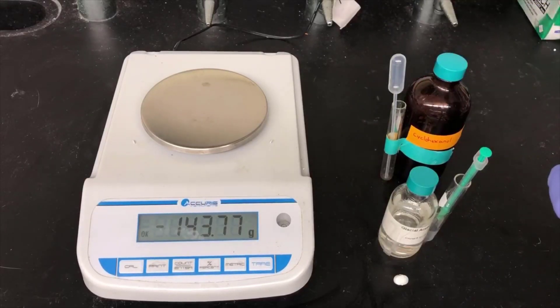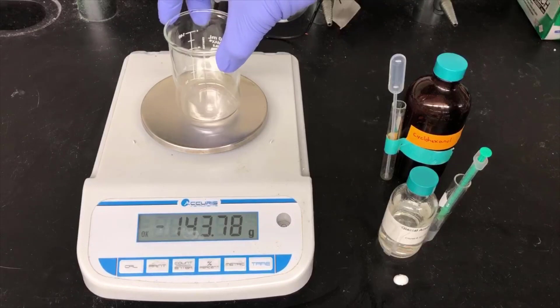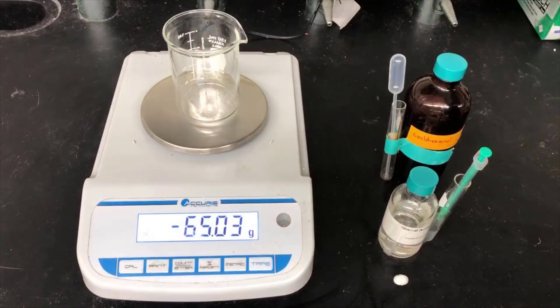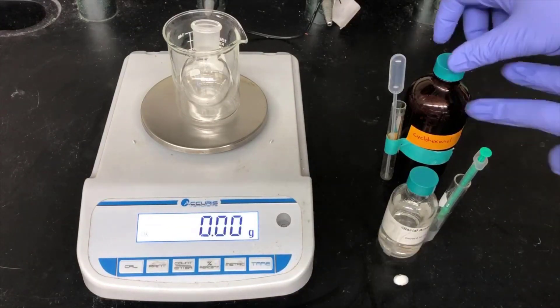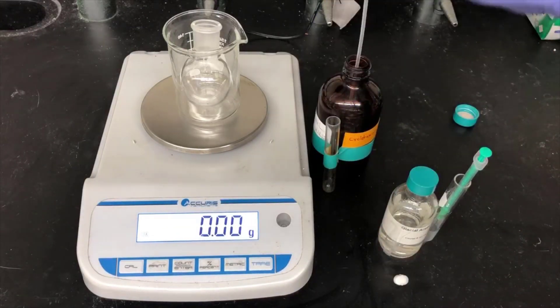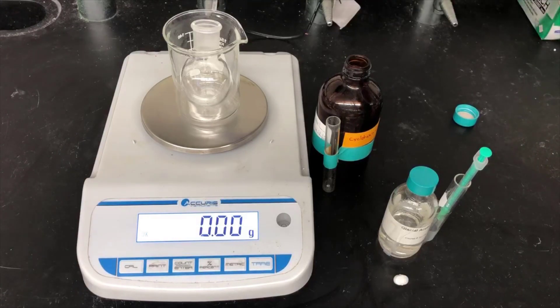We'll start the experiment by weighing out 1.50 grams of cyclohexanol. Get a beaker and a 50 milliliter round bottom flask, put them on the balance, and zero the balance. Then I'll pipette in cyclohexanol until I hit the 1.50 mark.